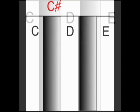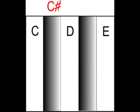Here is C sharp. It's sharp because it's to the right of C and has a higher pitch. And here is Eb. It's flat because it's to the left of E and has a lower pitch.